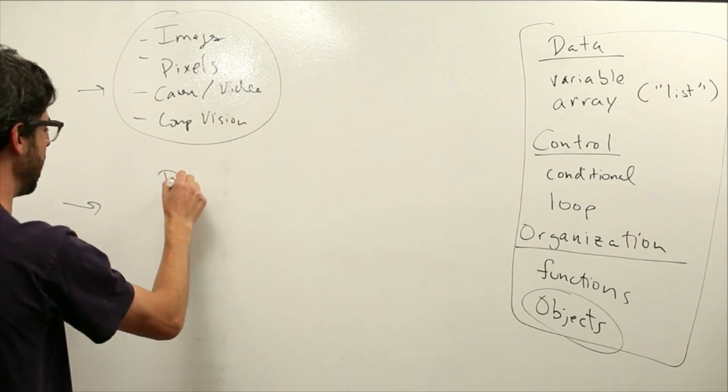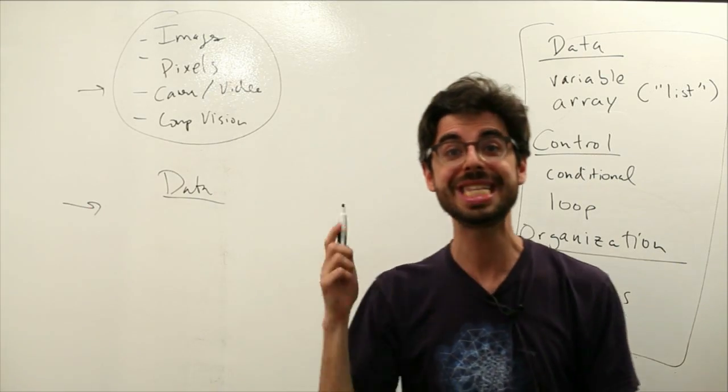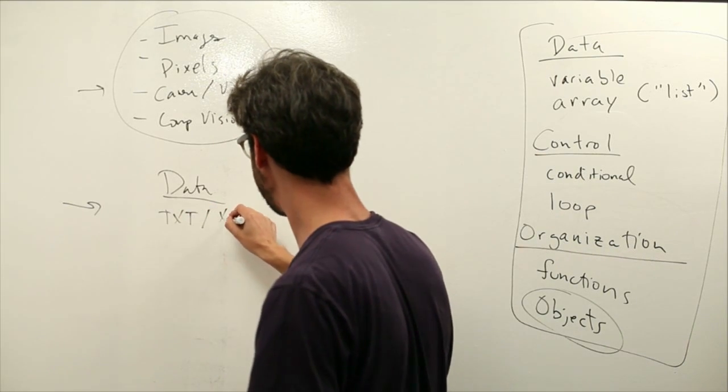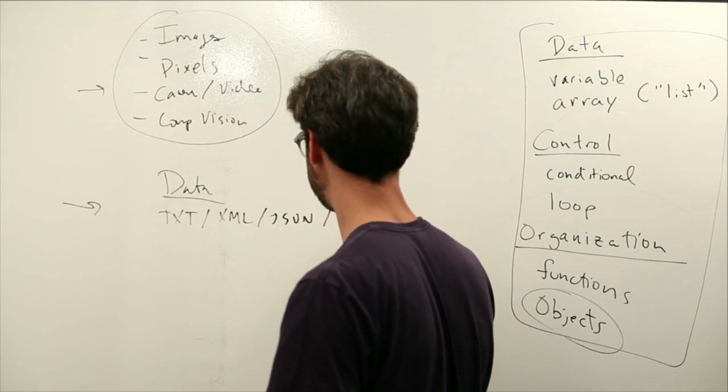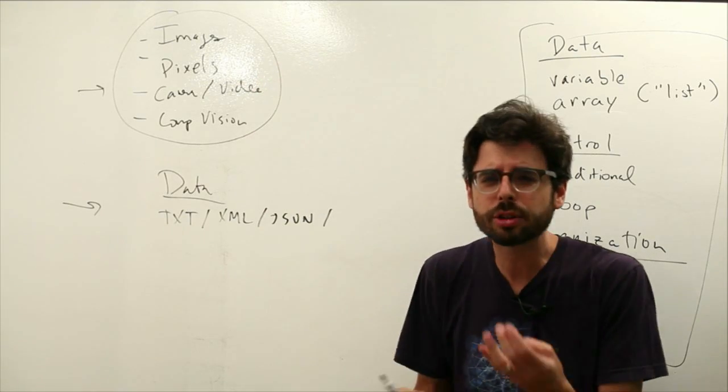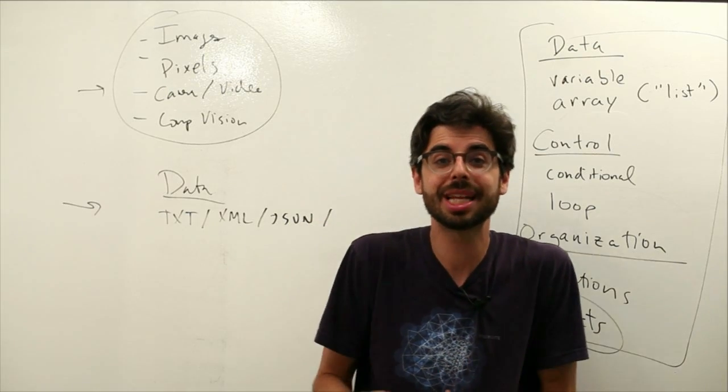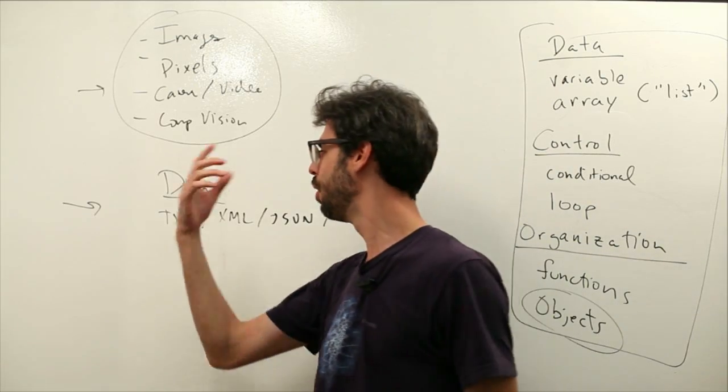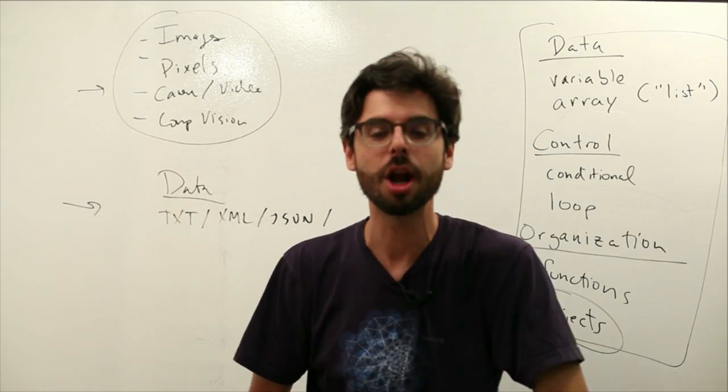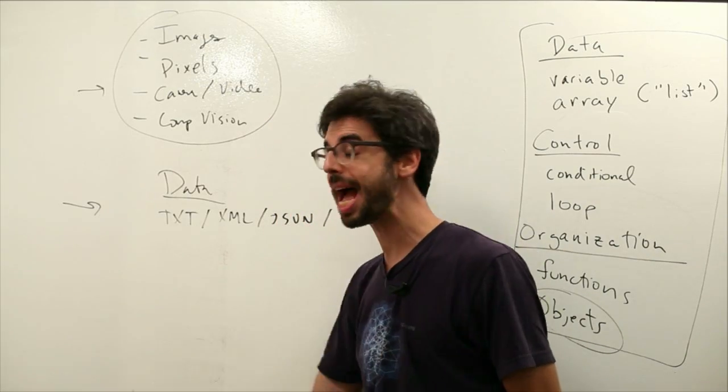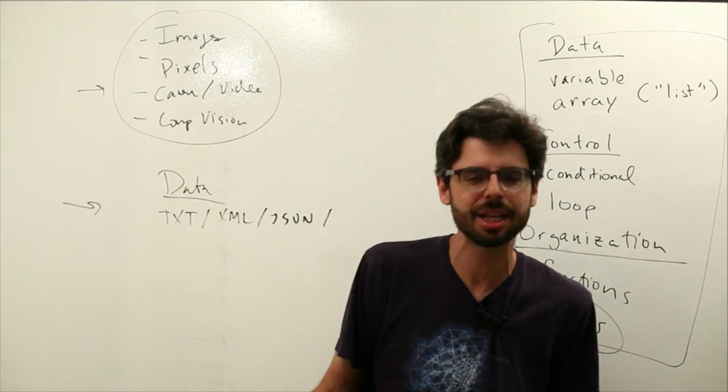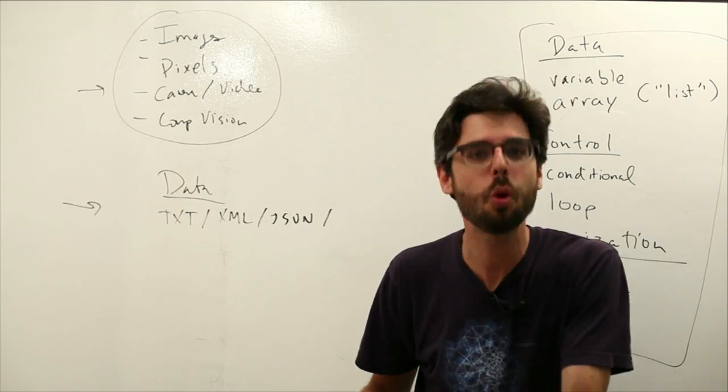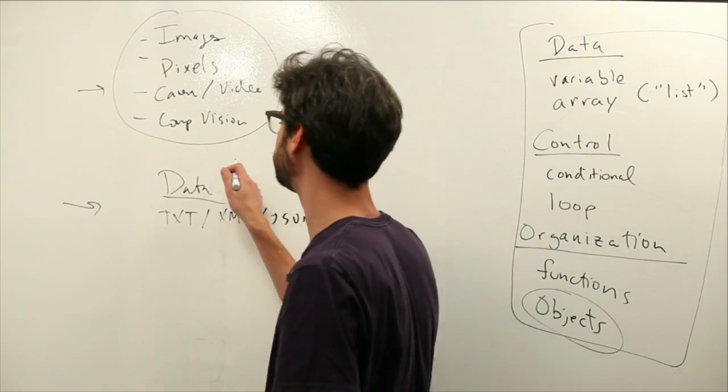I also want to look at data as a topic. So what does it mean to load data into a program? What are the kinds of ways of loading data? There's plain text and XML and JSON. There are all sorts of data classes in processing that allow you to load data, parse data, and draw stuff based on that data. So what does it mean to connect to data that's local versus data that's on a server? I want to look at a whole set of examples. What does it mean to work with text strings? What does it mean to read a novel and count all the words in that novel? To do a concordance. So I want to have a set of videos that deal with data.